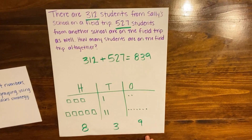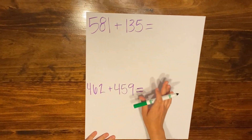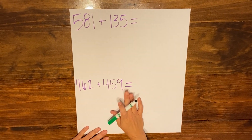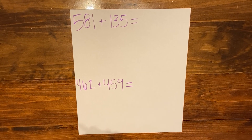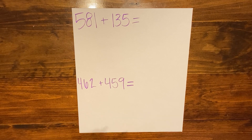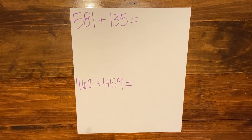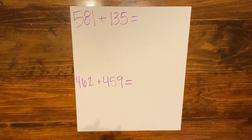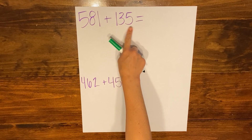Now we're going to look at a few more examples. In our previous problem we worked on a word problem, but now we're going to practice some regular computation. In our first problem, we didn't need to do any regrouping — we had the correct number of ones and tens. We're going to look at problems that could require regrouping. My two addends for this problem are 581 and 135.